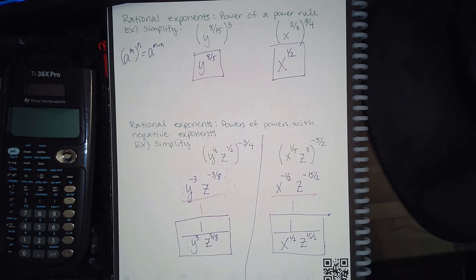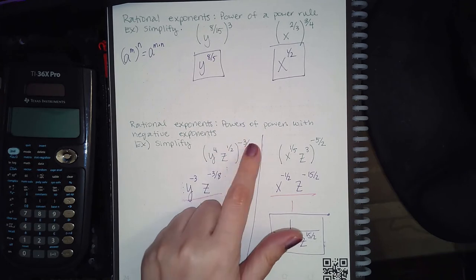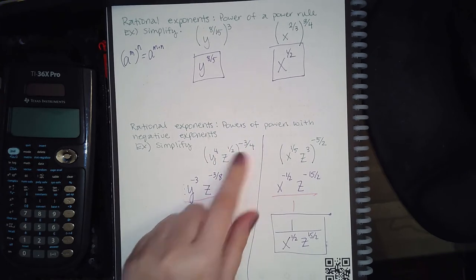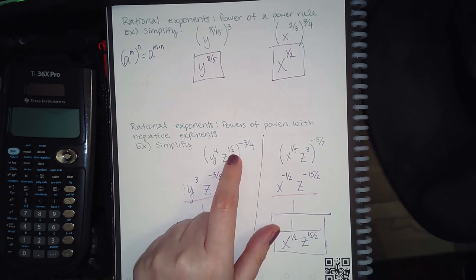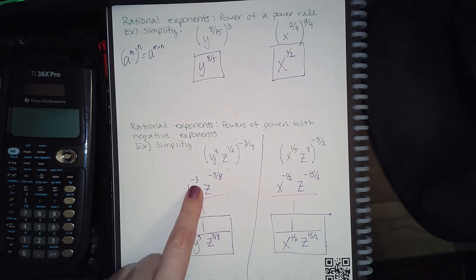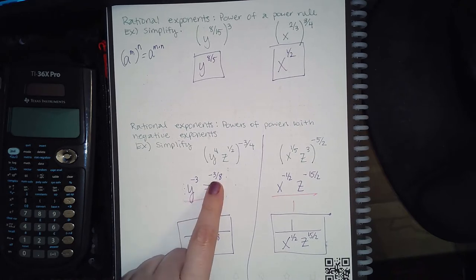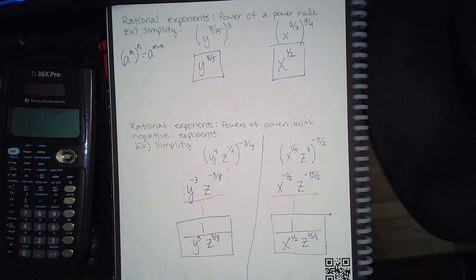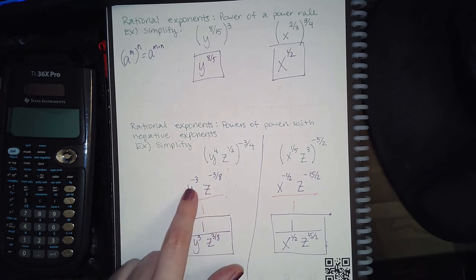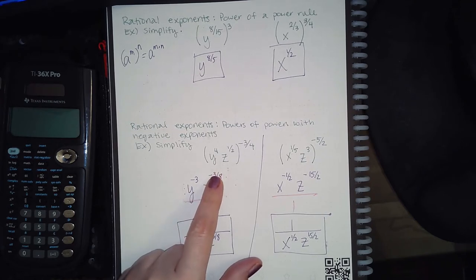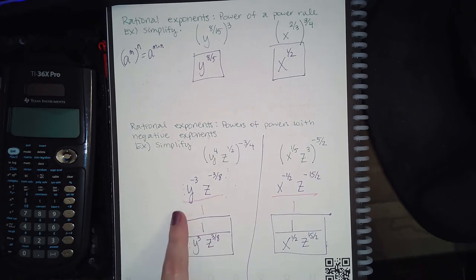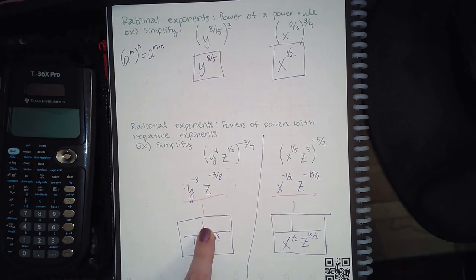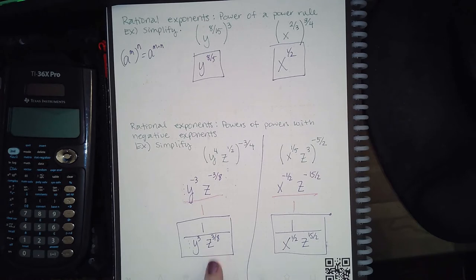For the next topic it's the same thing but now you have multiple bases and negative exponents. When we have multiple bases, we have to make sure that the exponent applies to both bases. So I take -3/4 and multiply it by 4, and take -3/4 and multiply it by 1/2, giving a -3 exponent for the y base and a -3 exponent for the z base. Since we cannot write answers with negative exponents, both factors go to the denominator, leaving just a 1 in the numerator as the final answer.